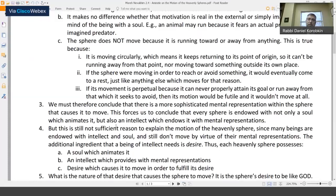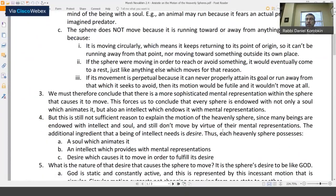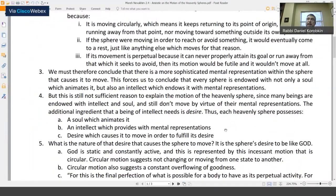A human being will be in motion for a number of different reasons. I may not have a particular benefit in moving towards picking up a book or something like that because I don't necessarily need the book for my survival. But if I wish to enrich myself in some way, to become more enobled, to become more enlightened, I may move for those reasons which are not for the purpose of gaining something that is more animalistic. So it's not just an animating soul, but there must be an intelligence that is contained within each and every sphere. But that's still not sufficient reason to explain the motion of the heavenly sphere. This is point number four. Since many beings are endowed with intellect and soul and still don't move by virtue of their mental representations, the additional ingredient that a being of intellect needs is desire. There has to be some kind of desire that an intelligent being needs in order to motivate it to move.